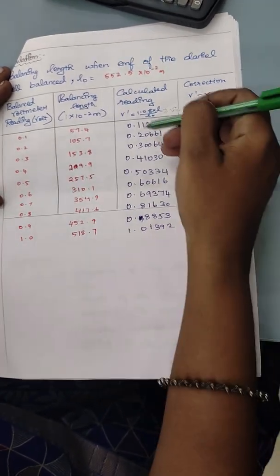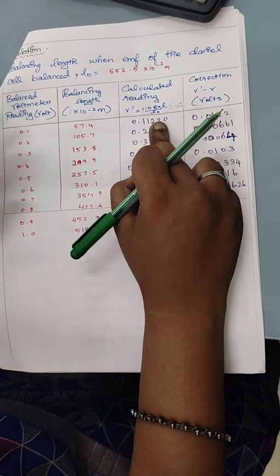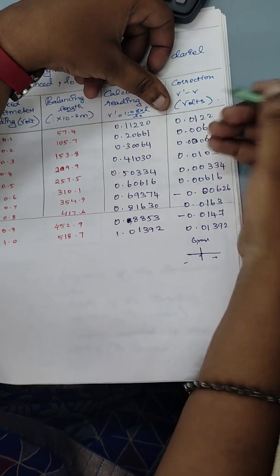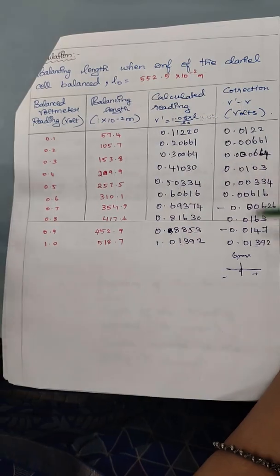So I have done the rest of the calculation for this part and I have V dash minus V values. So I have got this like this. So we can get positive or negative value for correction.